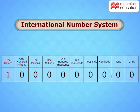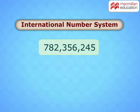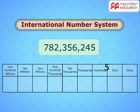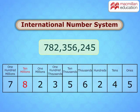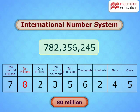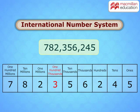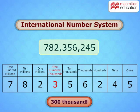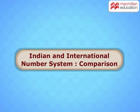Can you find the place value of 8 in this number according to the international number system? That's right — it is 80 million. And the place value of 3? Three hundred thousand. Brilliant!